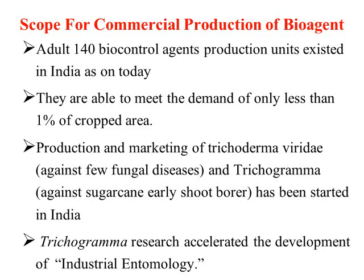The scope for commercial production of bio-agents is very great. As per government agency data, about 140 biocontrol agent-producing units producing different bio-agents and bio-pesticides are established in India, but they are able to meet demand for only less than 1% of the crop area across India. The production and marketing of Trichoderma viride against fungal diseases and Trichogramma against sugarcane stem borer has been started in India. Various agricultural universities and state agricultural institutes also produce these two major bio-agents.